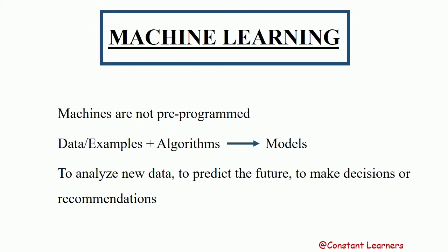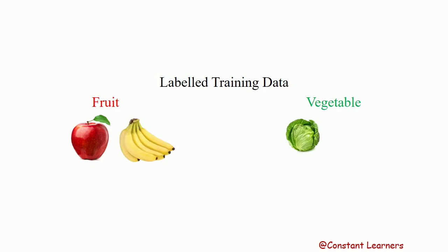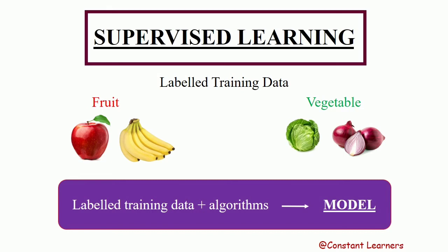When the machine is fed with properly labeled training data — for example, apple is a fruit, cabbage is a vegetable, banana is a fruit, onion is a vegetable — we are telling the machine the difference between fruit and vegetable, informing it which category a particular food item belongs to. When models are created using properly labeled training data, we call it supervised learning.